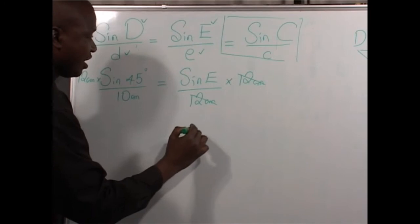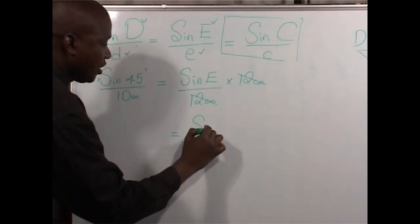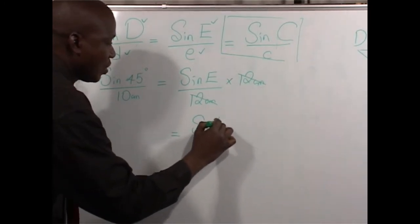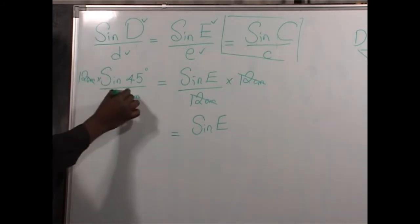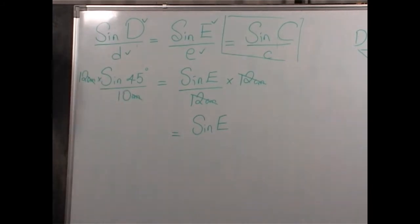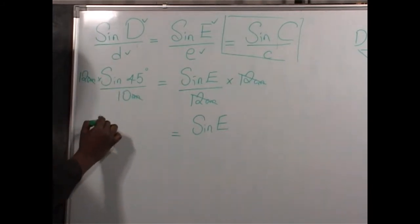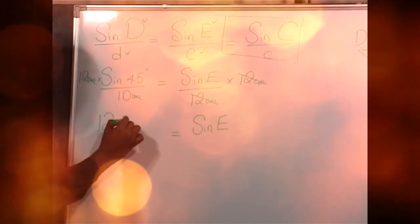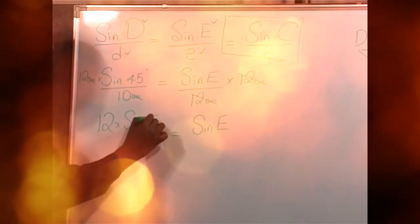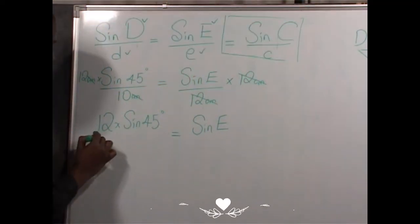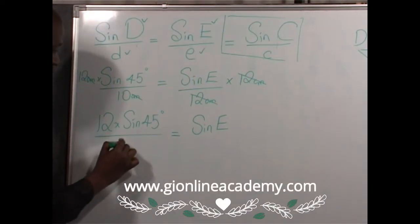On the right-hand side, we are going to remain with the sine of the angle at E. On the left-hand side, centimeters and centimeters will divide. We are going to remain with 12 multiplied by the sine of 45 degrees divided by 10.